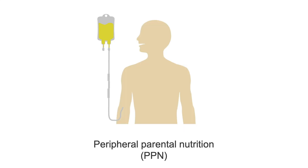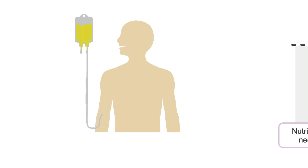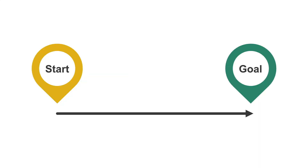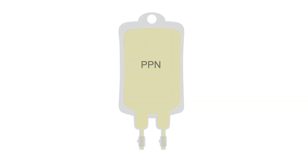Finally, let's talk briefly about PPN. Since PPN doesn't meet 100% of a patient's needs, it's unlikely there will be much to do in terms of advancement. Typically, the starting dose is the maximum dose, and if macronutrient advancement is necessary, conversion from PPN to TPN will be required.